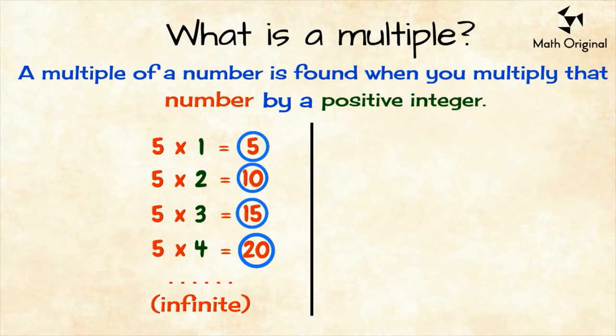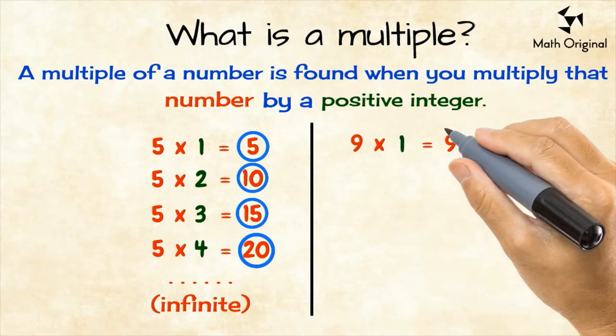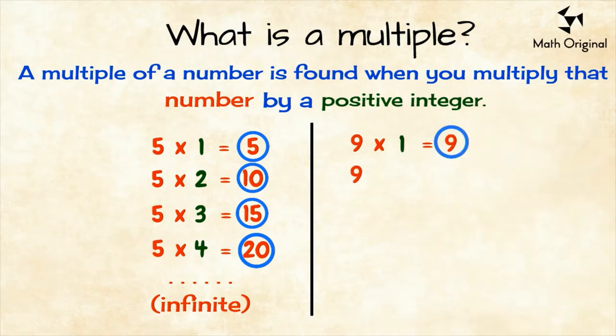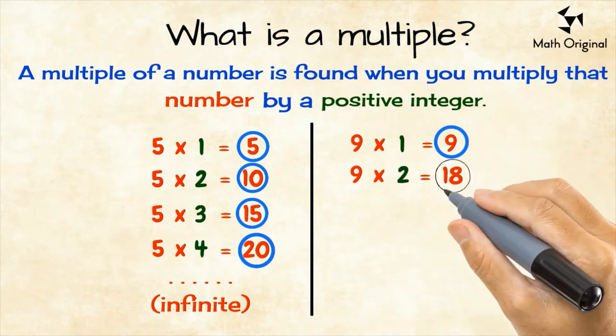Now let's have another example. Following the same steps as above, we will find the multiples of 9. 9 times 1 equals 9, the first multiple of 9 is 9. 9 times 2 equals 18, the second multiple is 18.